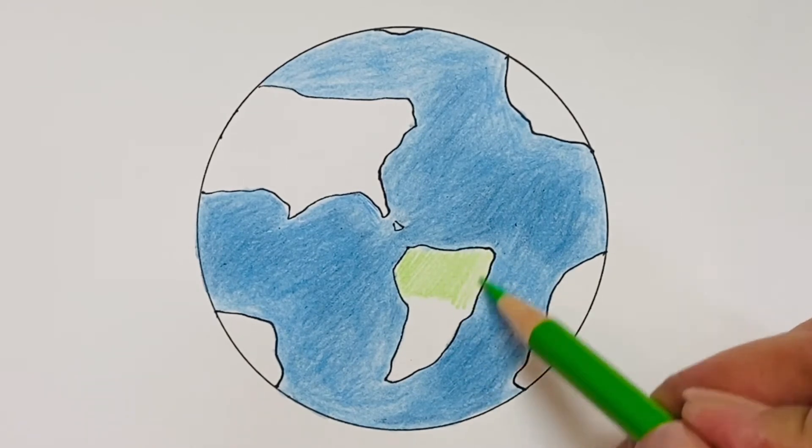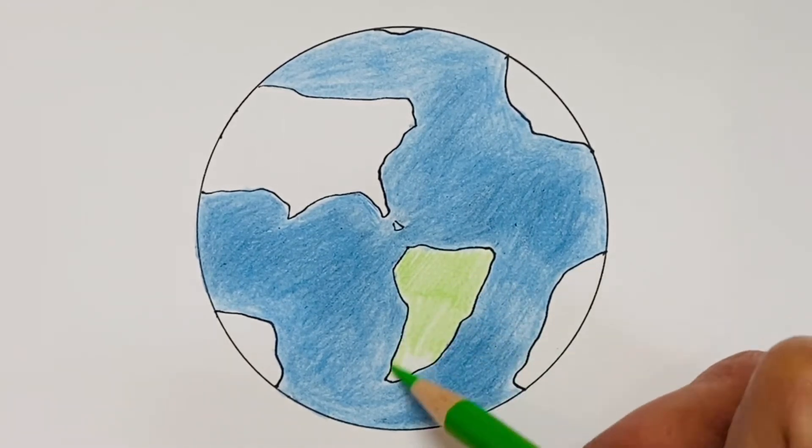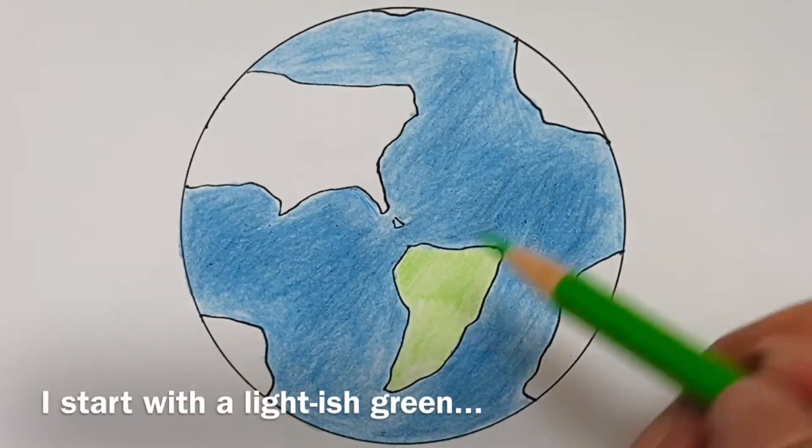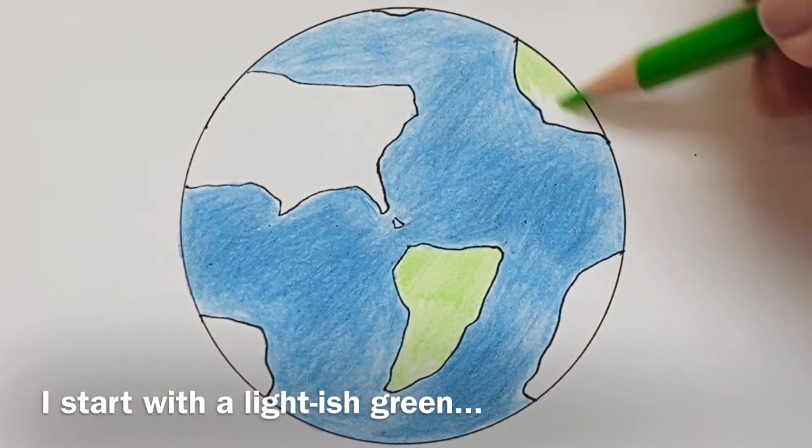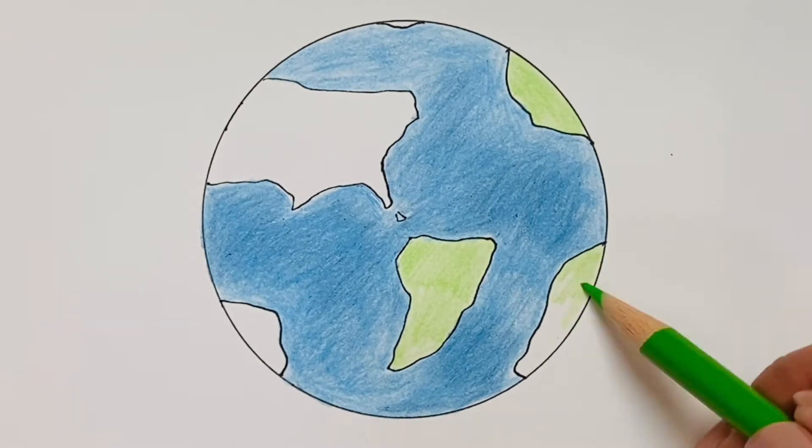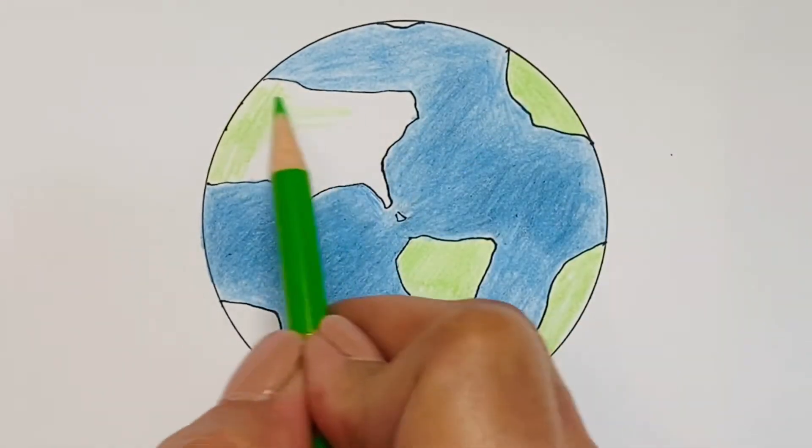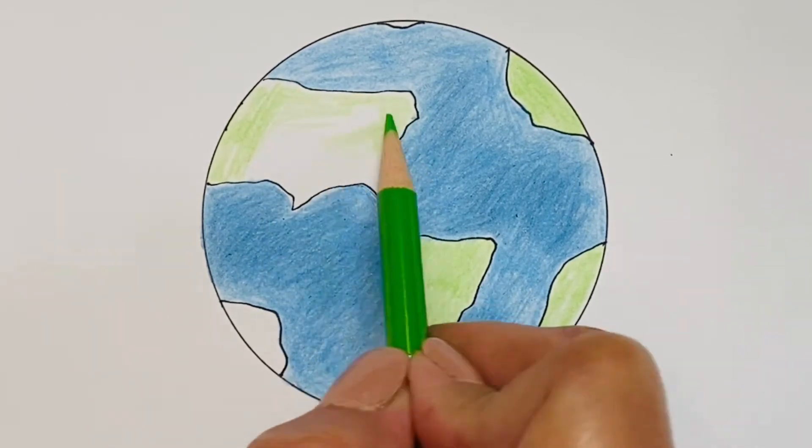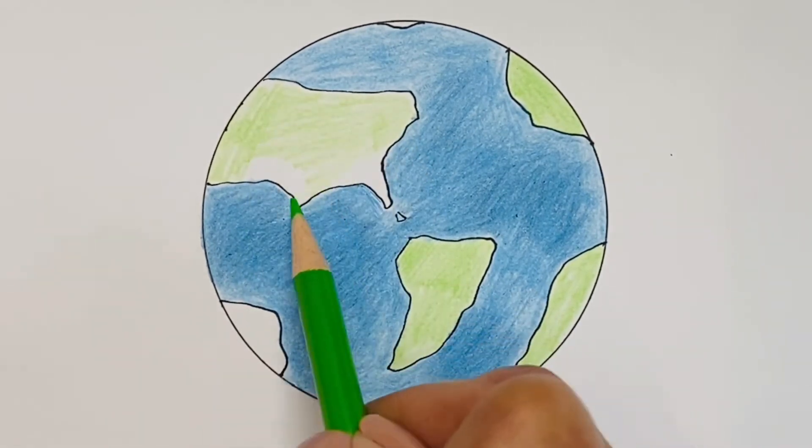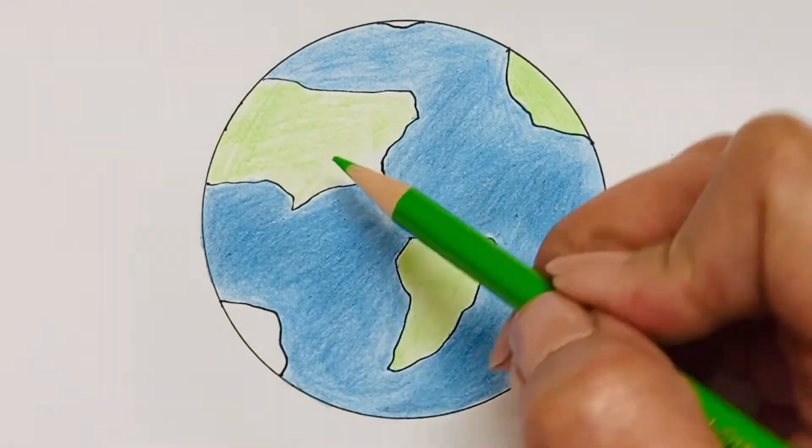Now for the continents, I'm going to start out with a light green and just lightly jot all those continents in with a light green. And then go back in and add a bit of dimension and contrast with darker greens.